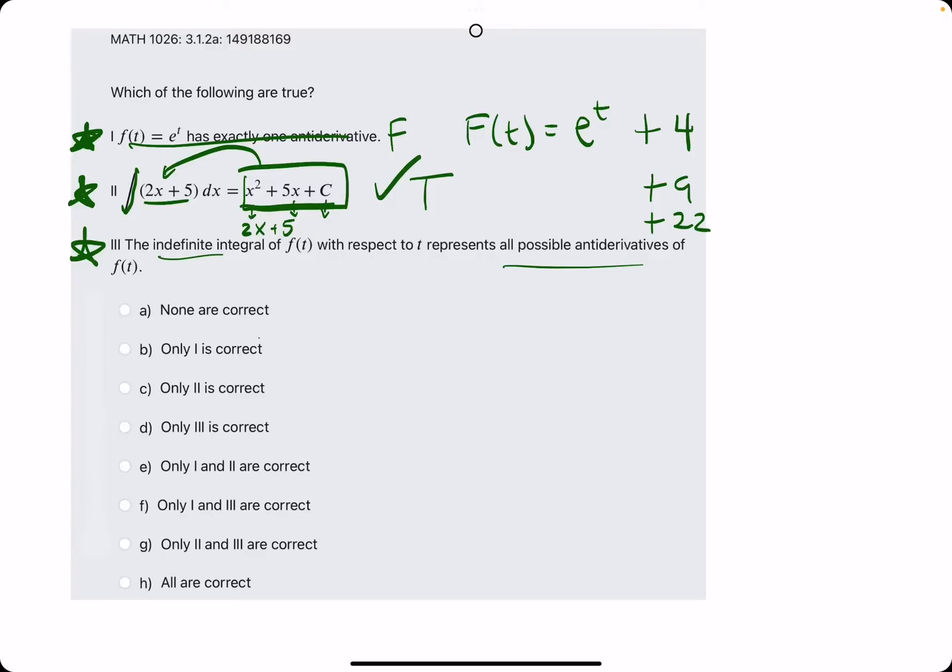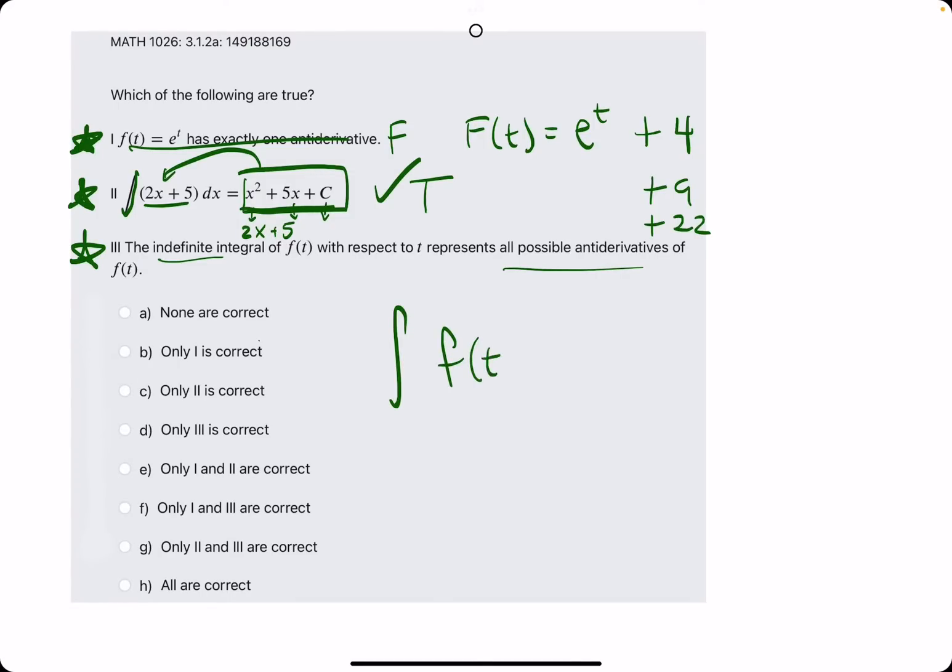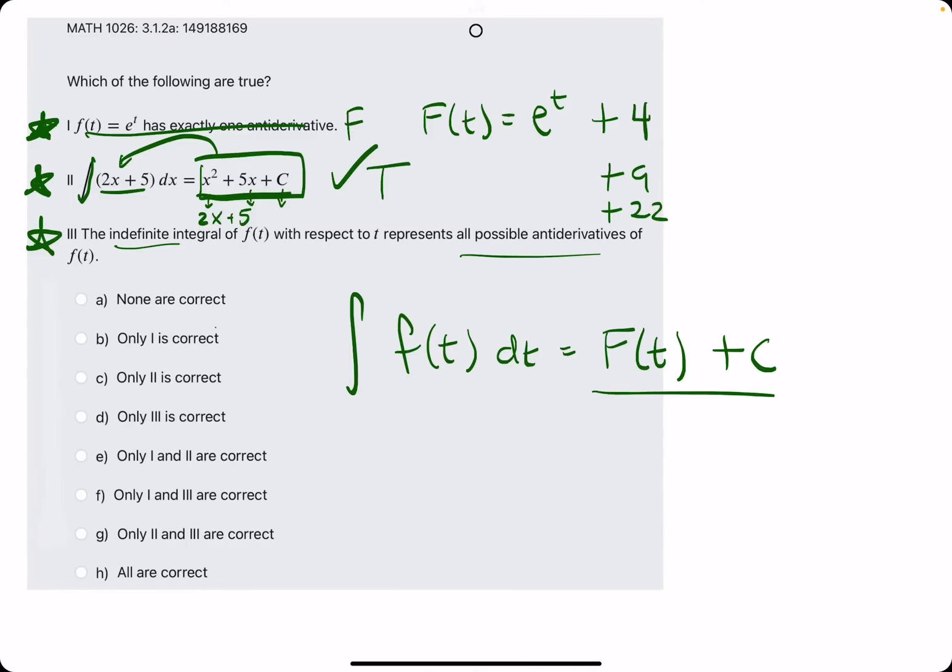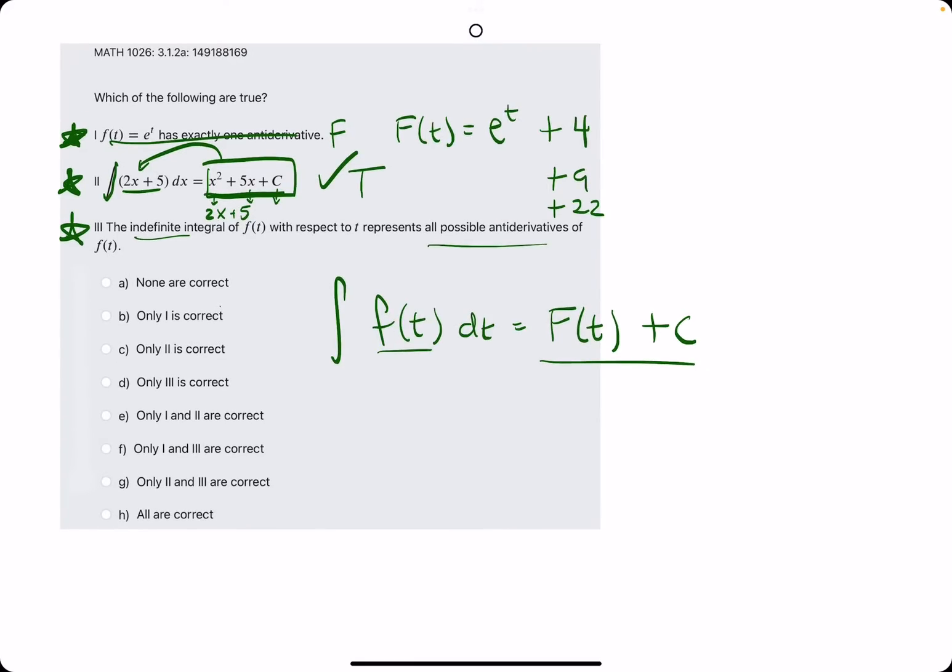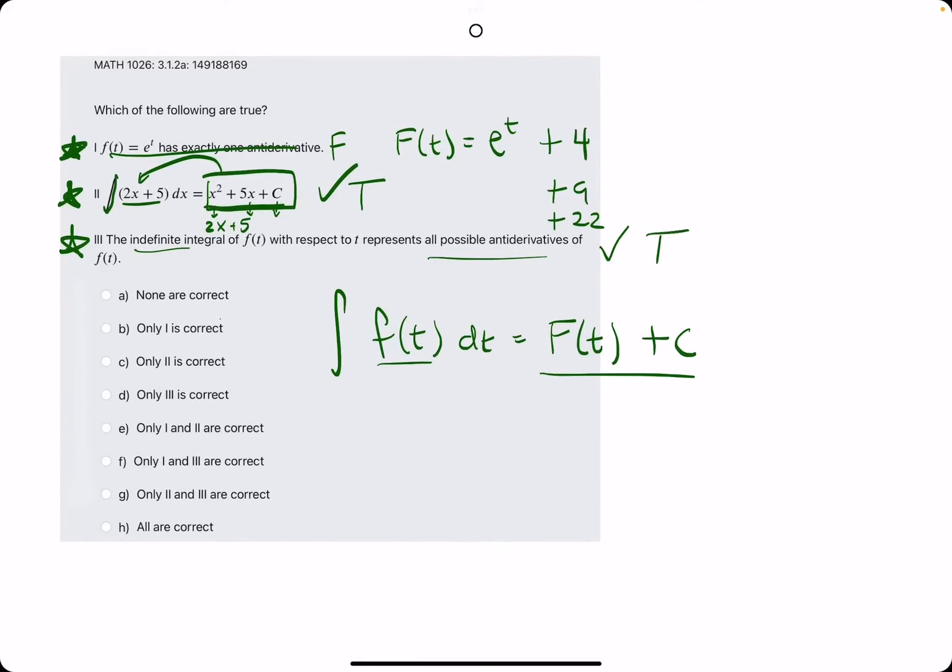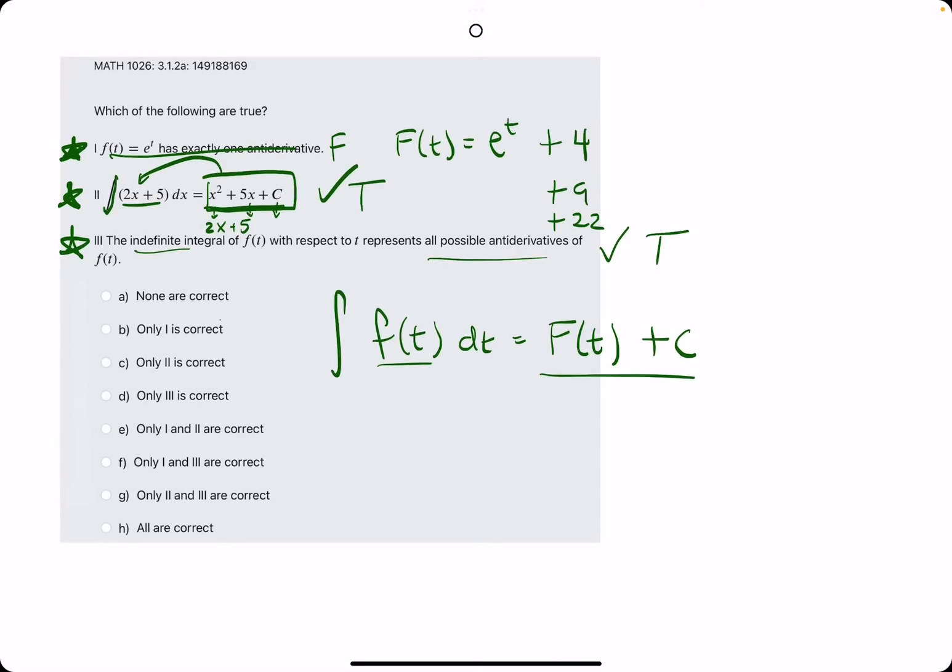They're saying, the indefinite integral of f(t) with respect to t represents all possible antiderivatives of f(t). This is kind of just a definition type of statement, and this is a true statement. Because when we see the integral of f(t) dt, we are finding its antiderivative, F(t), and we always add plus C. And so, this represents all the possible antiderivatives of f(t). It's kind of just true by definition. So, we're looking for 2 and 3 are correct. Looks like g is our answer here.